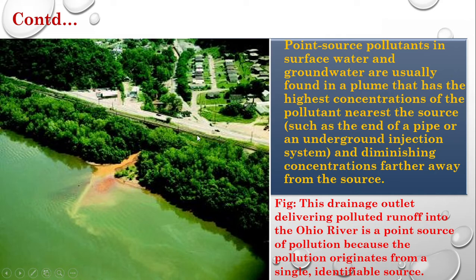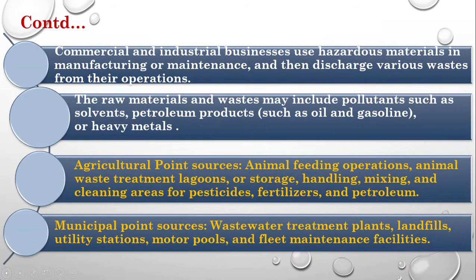Point sources of pollution can be seen in the form of a plume. This figure from the Ohio River shows a point source of pollution discharged from a drainage outlet into the river.